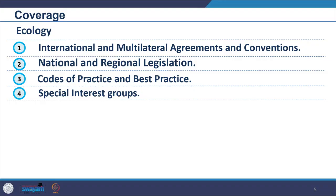The four components include key legislation and guidance and standards. Legislations are available at international and multinational agreements and conventions, at the level of national and regional legislation, and there are also industry codes and best practices, as well as special interest groups. Today's session will cover international and multilateral agreements and conventions, national and regional legislations, codes of practice and best practices, and we will also touch upon special interest groups.